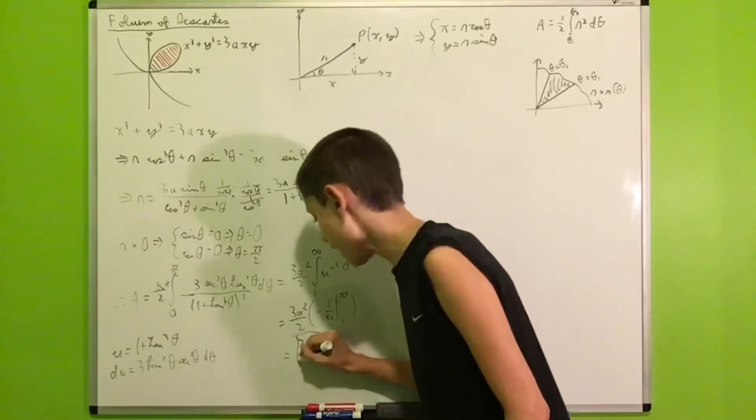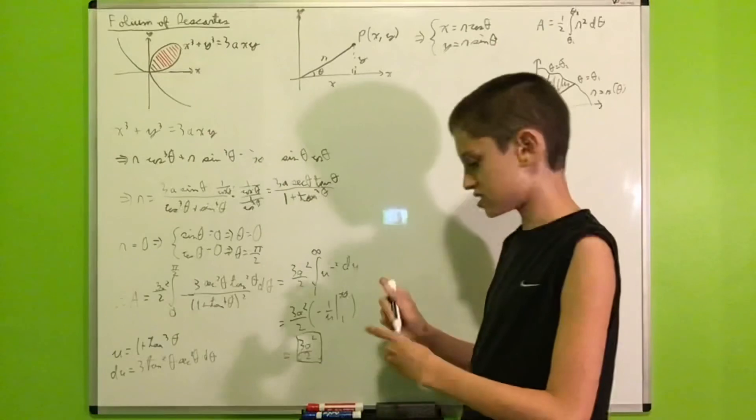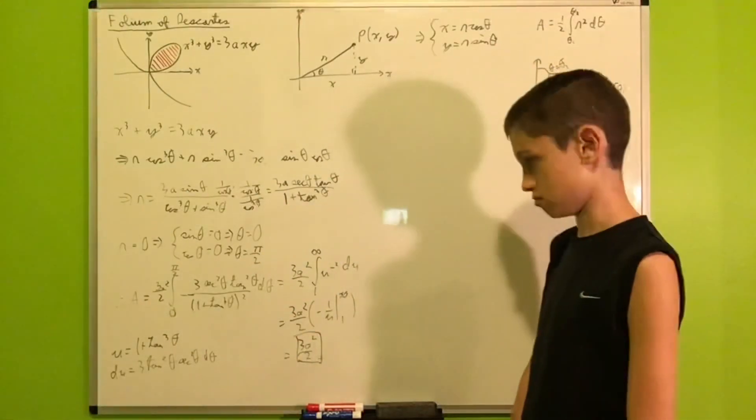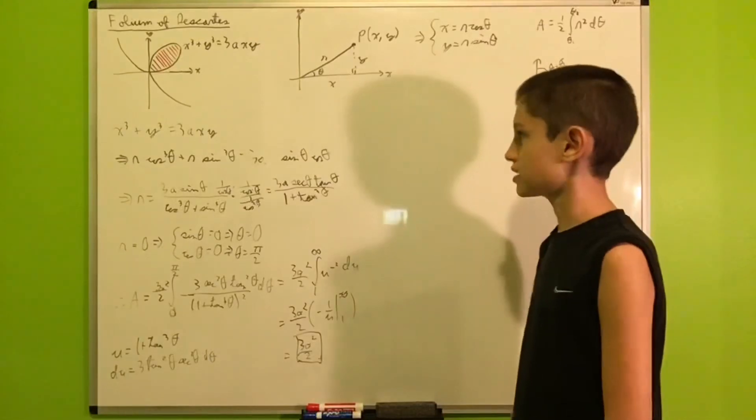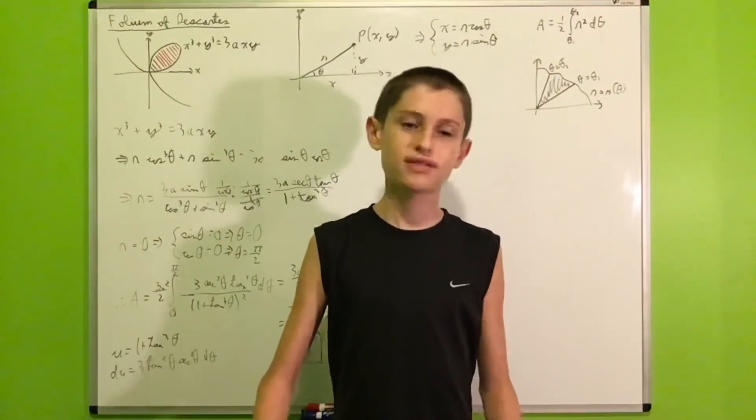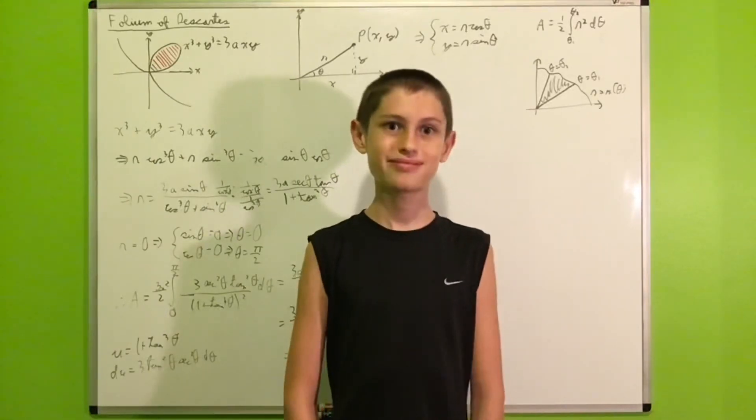Therefore, the area of this loop from the folium of Descartes is exactly 3a squared over 2. That's pretty nice, if you ask me. So, thank you guys for watching. If you liked this video, don't forget to like and subscribe and I'll see you in the next video. Bye.